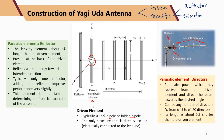The reflector is usually placed at the back of the driven element. It is the longest element in the Yagi-Uda antenna, about 5% longer than the driven element. The reflector reflects all energy from the driven element towards the intended direction, and it plays an important role in determining the front-to-back ratio of the antenna.